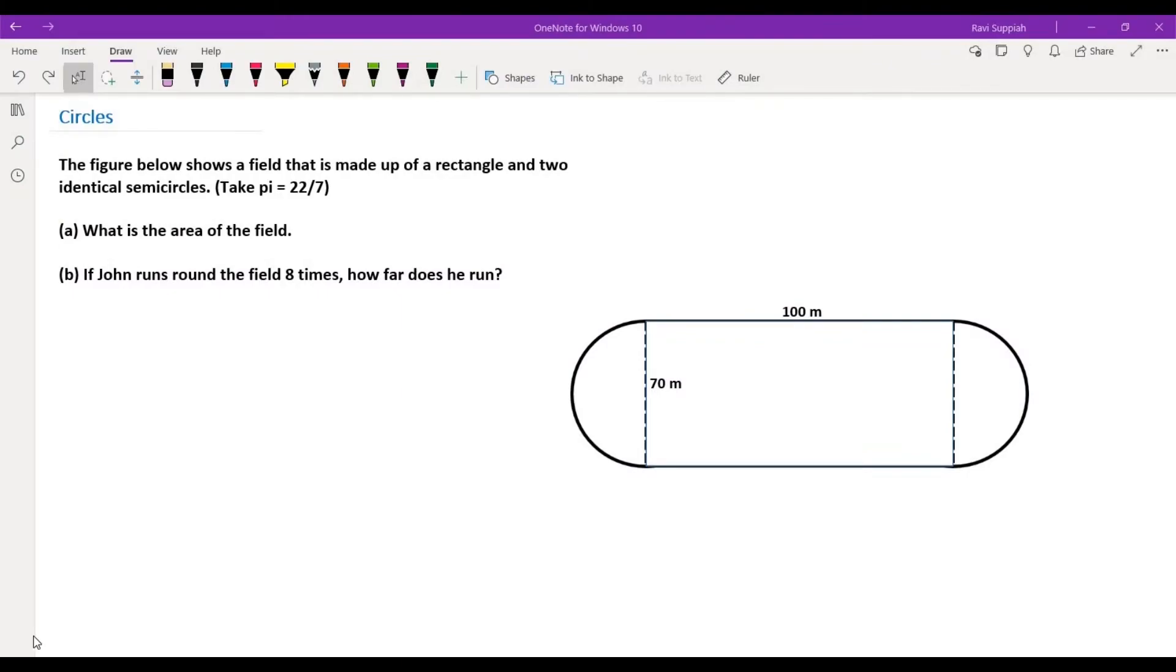Hi kids, let's look at this question on circles. We are told that the figure below shows a field that is made up of a rectangle and two identical semicircles. In part A, we are asked to find the area of the field.